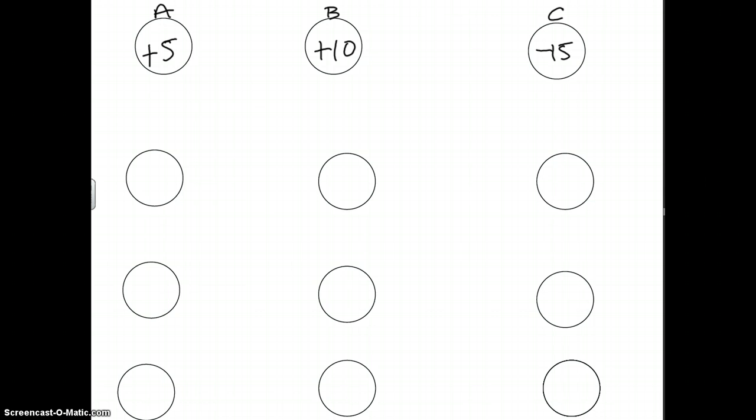It says A touches B and then they are pulled apart. When doing this, you have to touch them together and get the total of them, then divide by however many spheres it was. Since it was two spheres, A and B, we do 5 plus 10 which equals 15, and then we do 15 divided by 2 which equals 7.5.